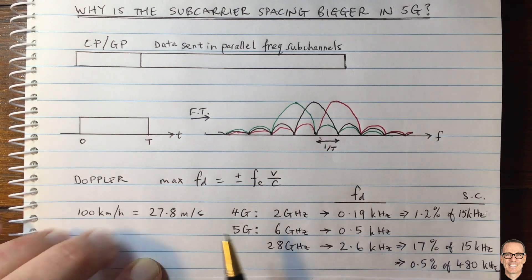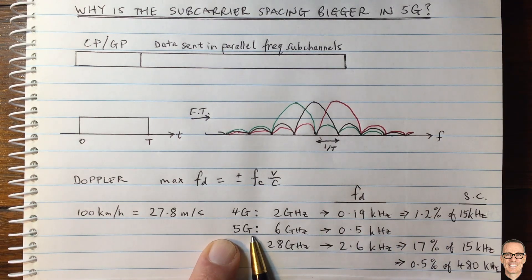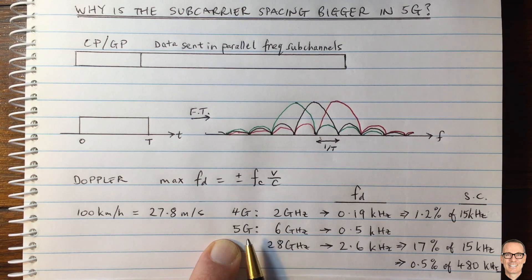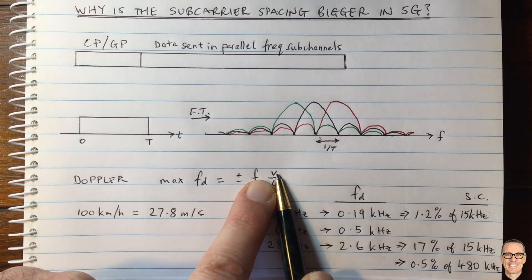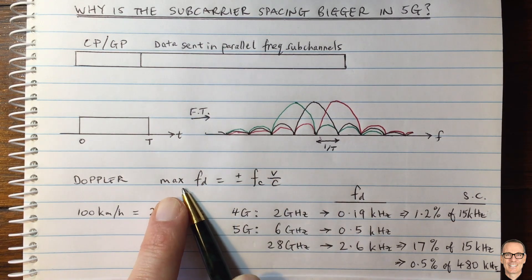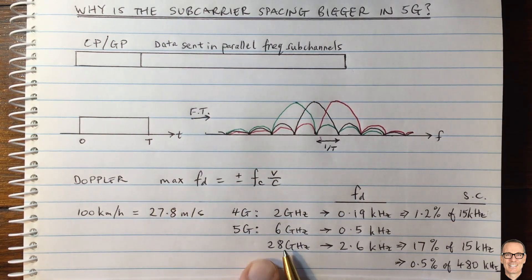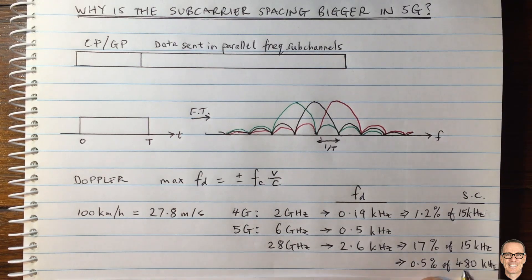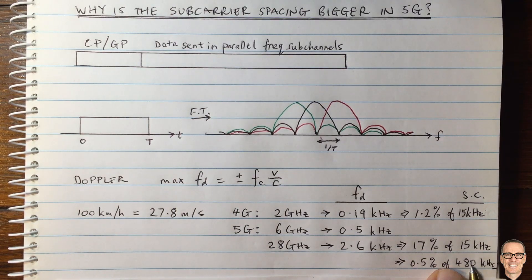And one final thing to say is also with 5G, there is plans for having 5G delivered over low earth orbit satellite services. And in that case, the velocity would be increasing quite significantly because those satellites are traveling very quickly, which means that the Doppler spread is going to be even bigger. And that's another incentive for having such wide sub-carriers.